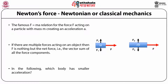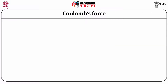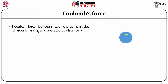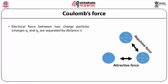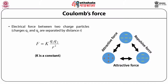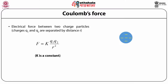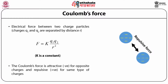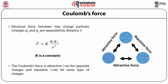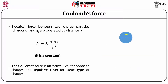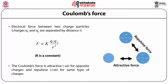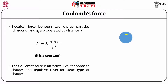Electrical force between two charged particles is called Coulomb's force. If the charges on the two particles are Q1 and Q2, separated by distance R, then mathematically the force is given by F = K × Q1 × Q2 / R². Coulomb's force is attractive for opposite charges and repulsive for same-type charges. For example, two negatively charged particles repel, while a positive and negative charge attract.